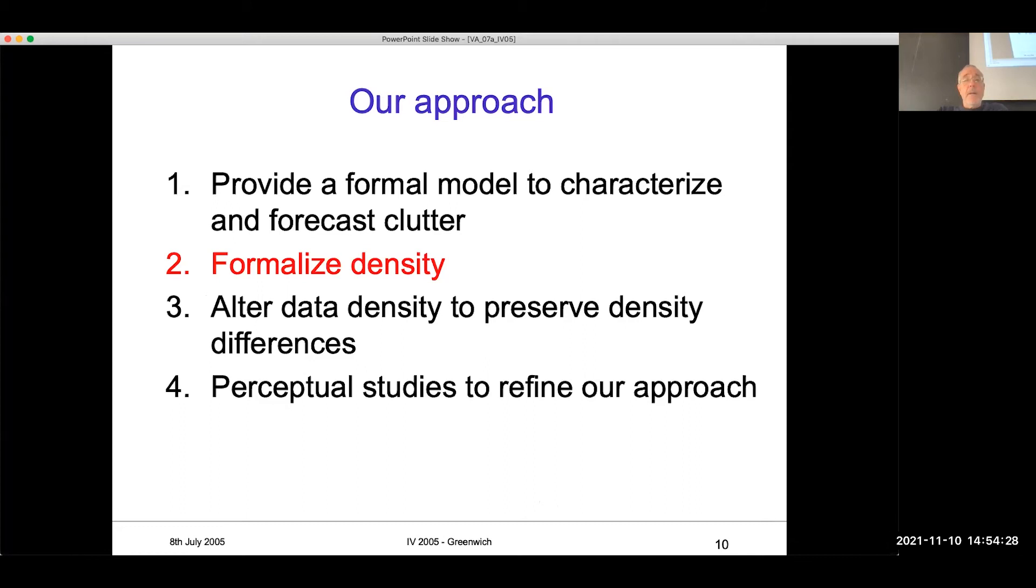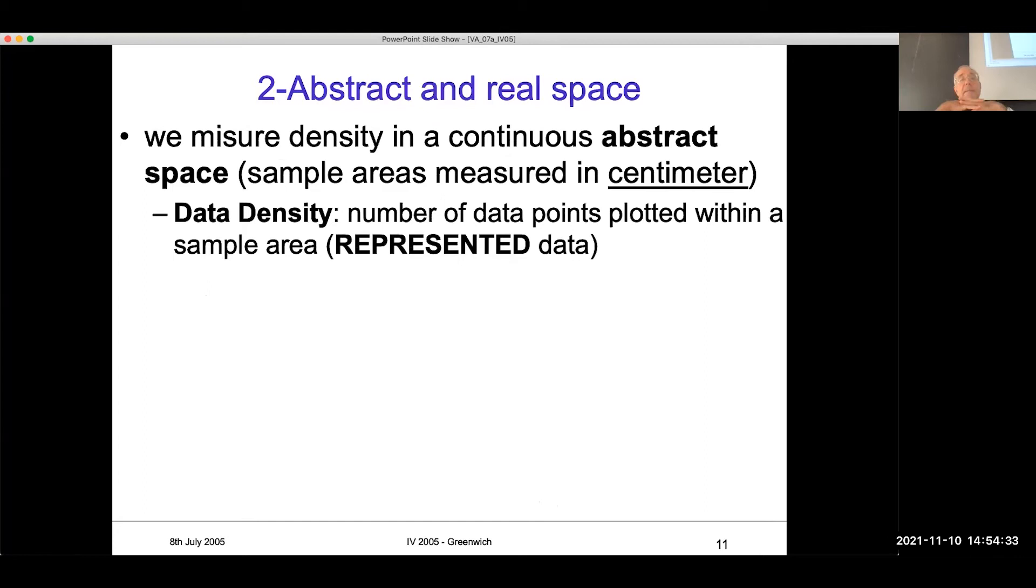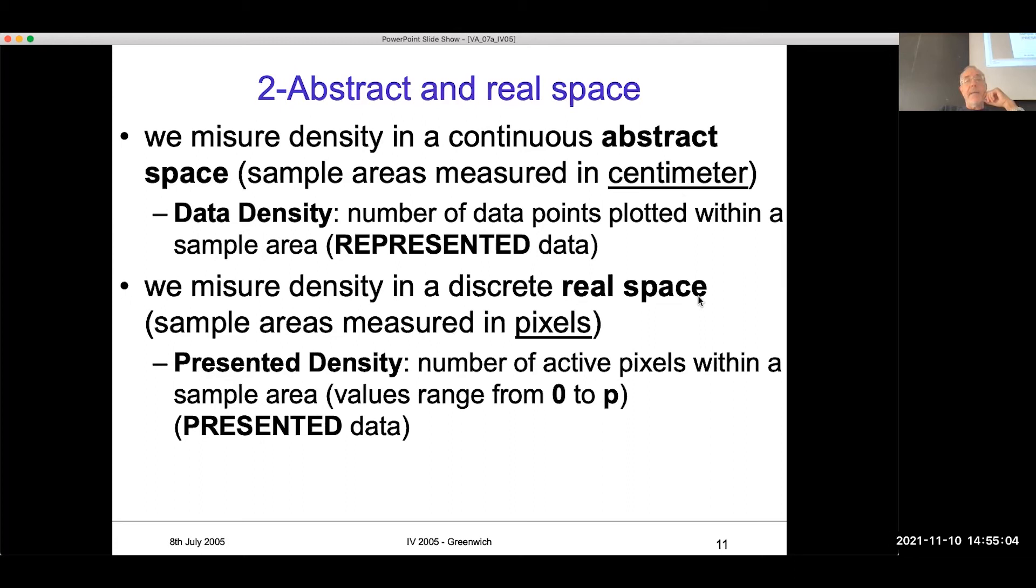What about the formalizing density? It is really easy. Basically, we have an output space that is measured in centimeter. And we had data density. We have a square, two centimeter by two centimeter, one centimeter by one centimeter. And we measure how many elements are inside that square. And that is data density. It is about represented data. It is an infinite resolution. If you move in the real space, the area is measured in pixel, eight by eight. And the presented density is the number of pixels that are on, basically.